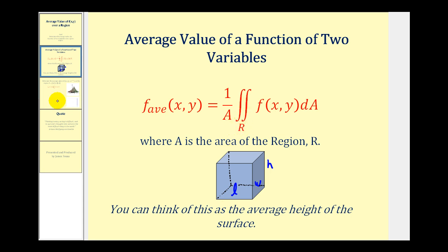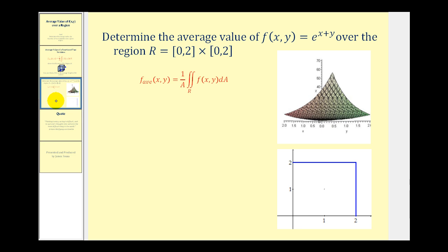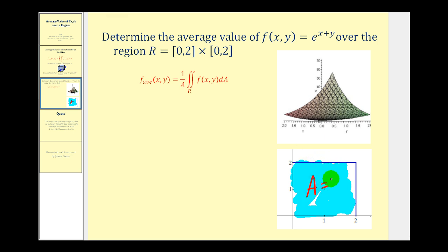Let's go ahead and take a look at an example. We want to determine the average value of f(x, y) = e^(x+y) over the region where x is on the closed interval from zero to two, and so is y. This would represent our region of integration, a square, so A is going to equal four.